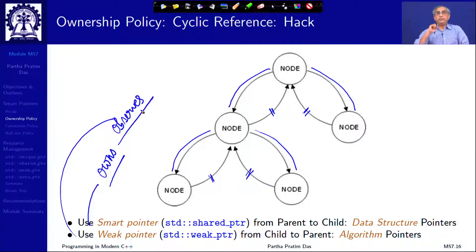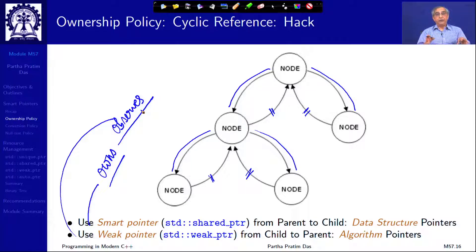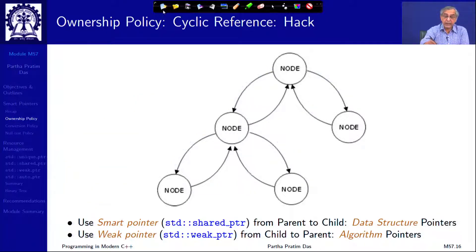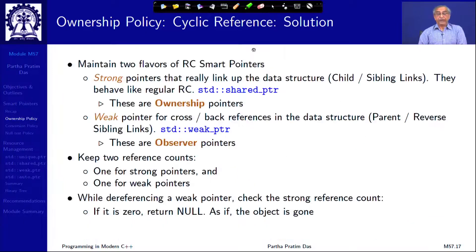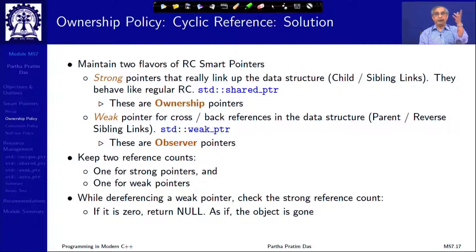A weak pointer observes whether some smart pointer is holding the object or not. The fact that a weak pointer is pointing to an object is not a restriction for that object to be deleted. Whereas if a shared pointer is pointing to it, then that object cannot be deleted. This is the simple trick that is introduced. The strong pointers are really the links in the data structure, whereas the weak pointers are primarily the algorithm pointers — they just observe and keep track.